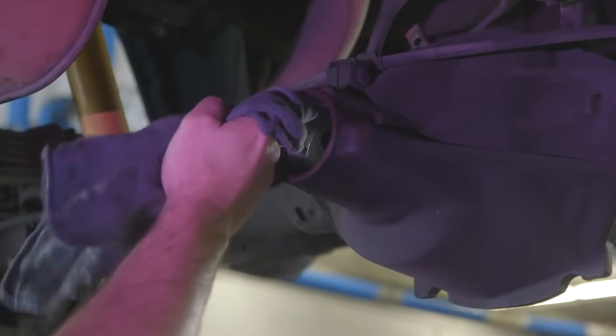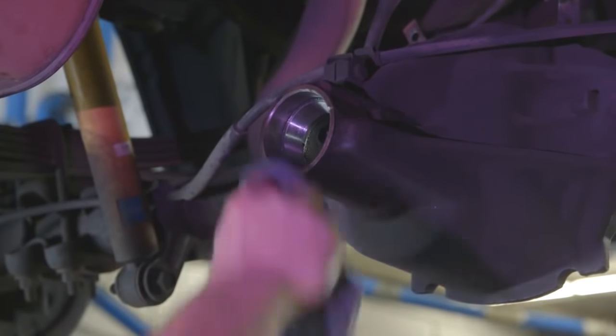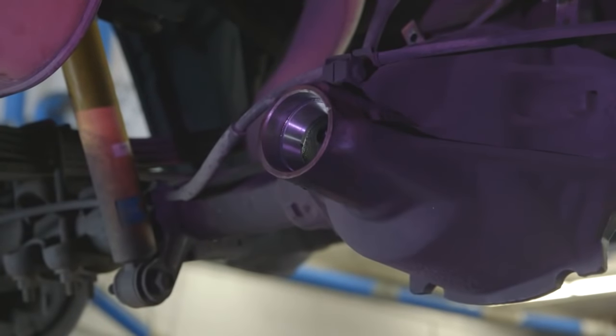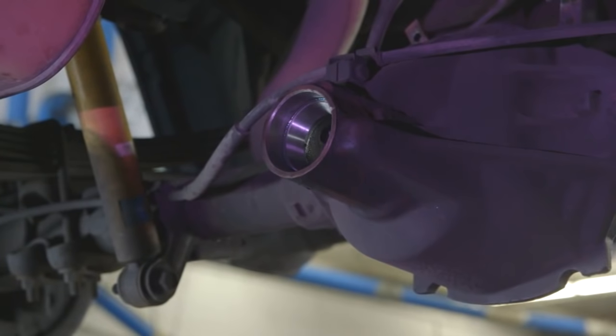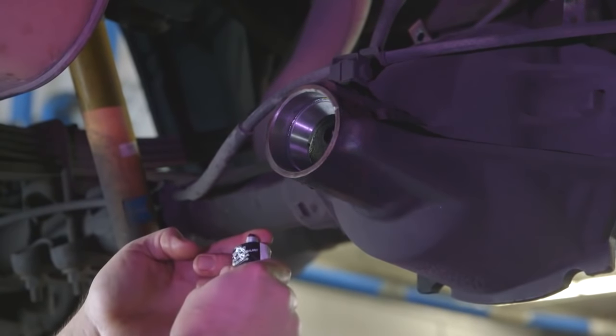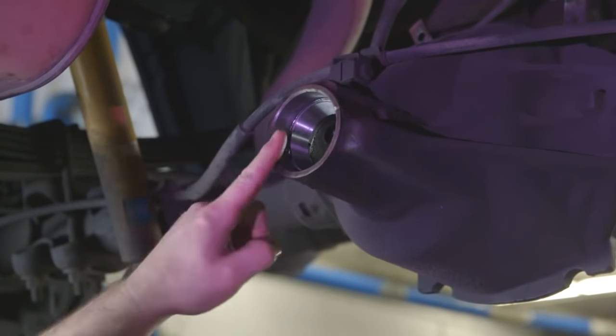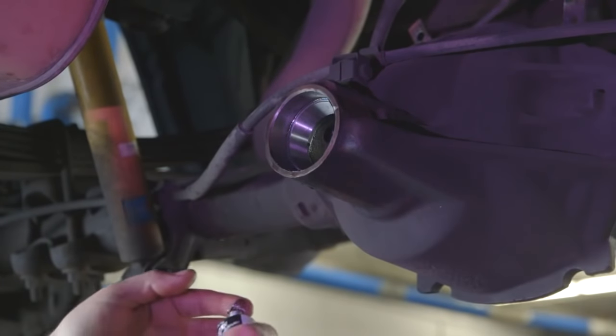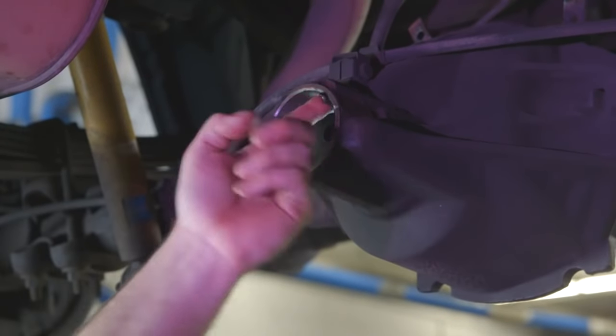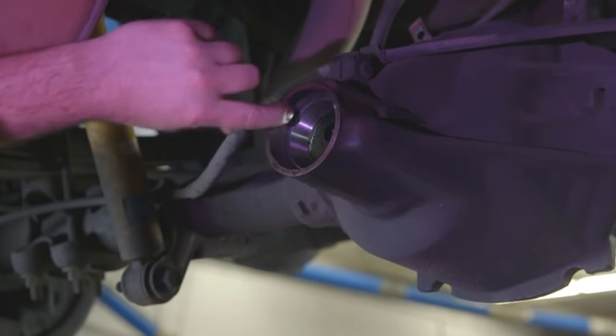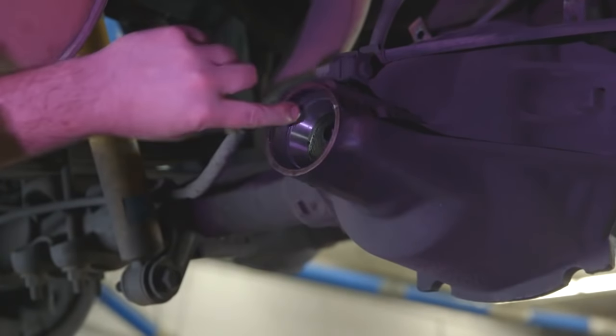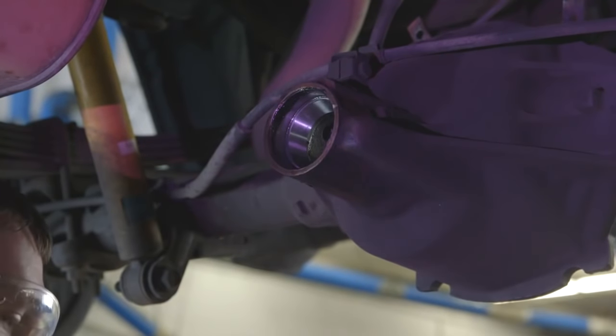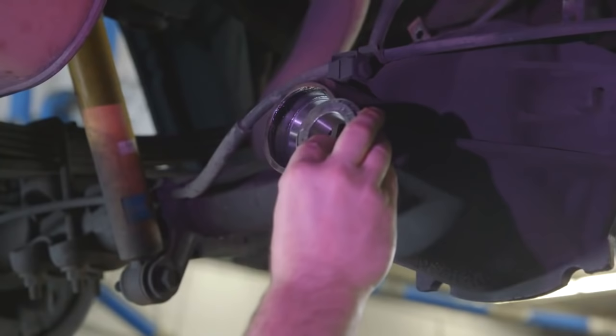Before installing the front pinion bearing and seal, clean the installed races and pinion seal seat. Apply high quality silicone to either the pinion seal seat or the seal itself. Install the pre-oiled front pinion bearing and pinion seal.